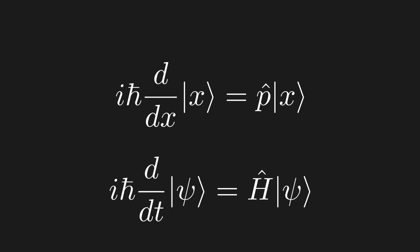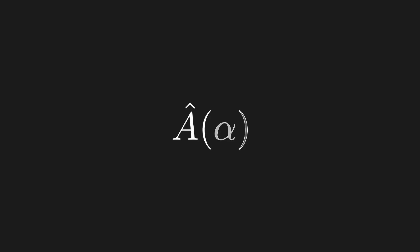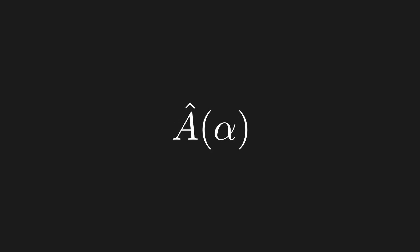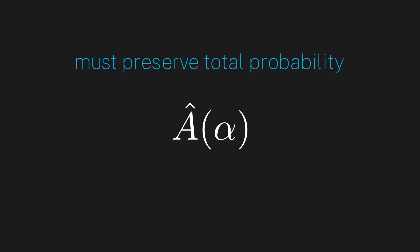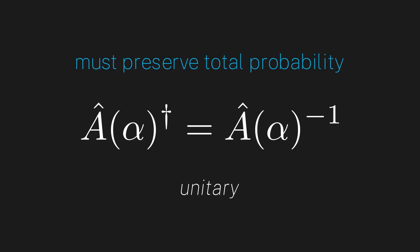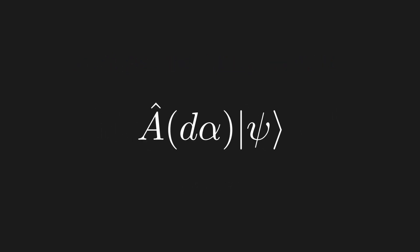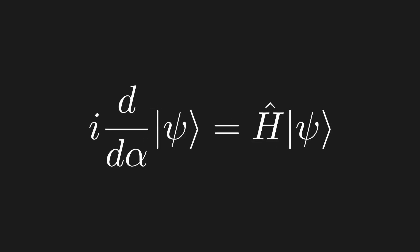Notice how similar this equation is to the Schrödinger equation we derived last episode — all the terms in the momentum equation come from the same fundamental principles. There is a pattern here, and one of the biggest gifts of being a physicist is discovering patterns in math and nature. We first start with a transformation operator that depends on some parameter, like time evolution or spatial translation. We then reason that this transformation must preserve total probability, which implies the transformation is unitary. We then look at how the operator acts over a differential value for the parameter, and using the unitary property we get an equation of the form: i times the derivative with respect to our parameter equals the action of some Hermitian operator.